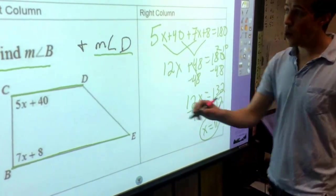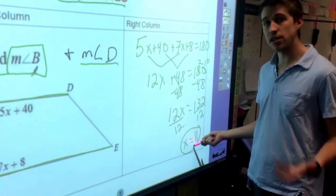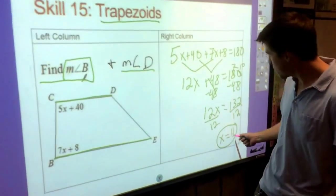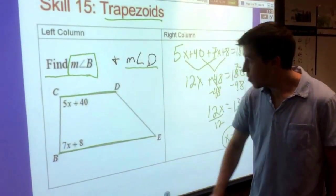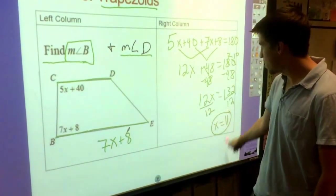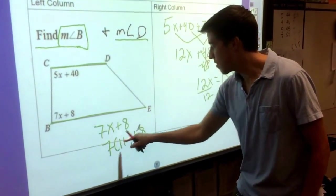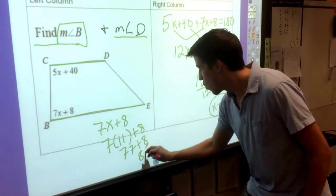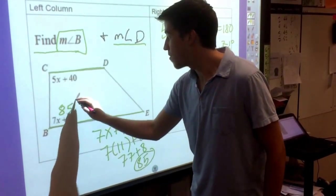But we're not done yet, because I wanted you to find the measure of angle B, and we just solved for X. Those aren't the same thing. So we have to take the algebra that we know about angle B and substitute our answer where we see X. So in this problem, we'll take what we know about angle B, 7X plus 8, and we'll substitute in our 11. 7 times 11 plus 8, 7 times 11 is 77, plus 8 will be 85. So angle B here is 85 degrees.